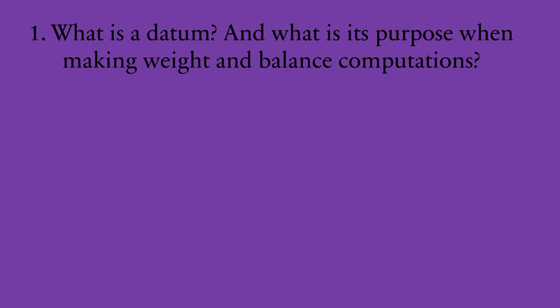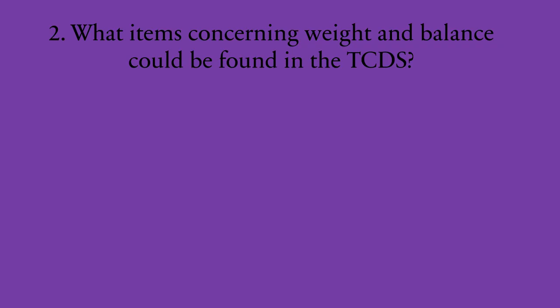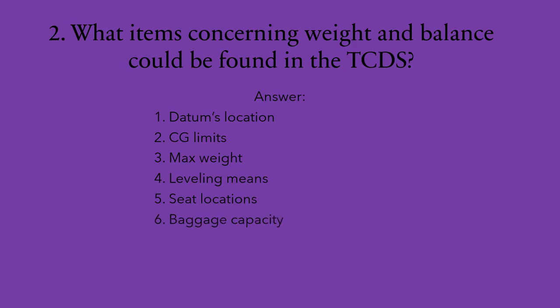What is a datum, and what is its purpose when making weight and balance computations? A datum is an imaginary vertical line or plane from which all horizontal measurements are taken. It is used as a reference point to determine the location of items along the longitudinal axis. What items concerning weight and balance can be found in the type certificate data sheet? There are several: the datum's location, CG limits, maximum weights, leveling means, seat locations, baggage capacity, fuel and oil locations and capacity, and engine horsepower.